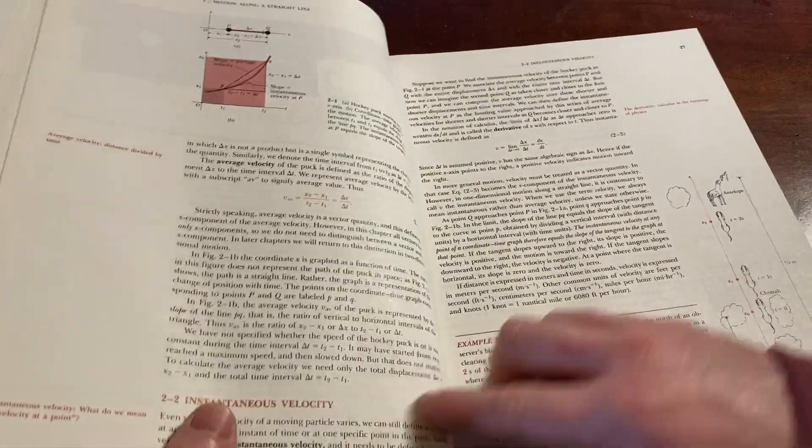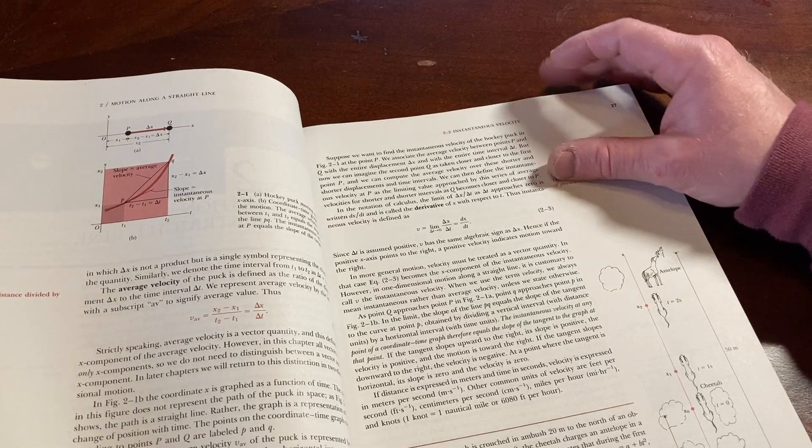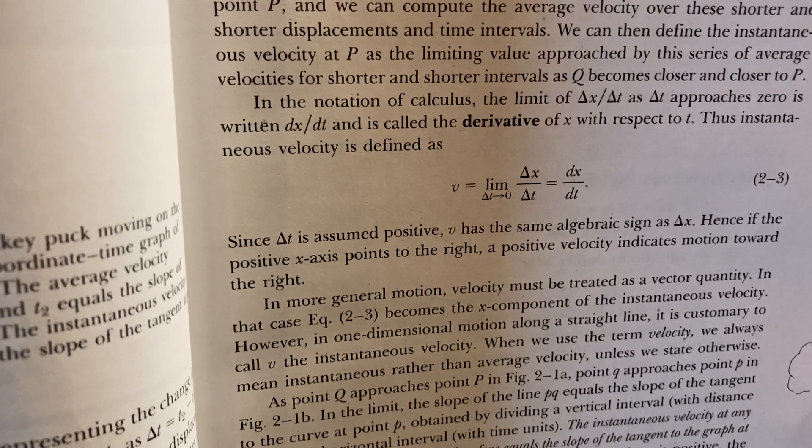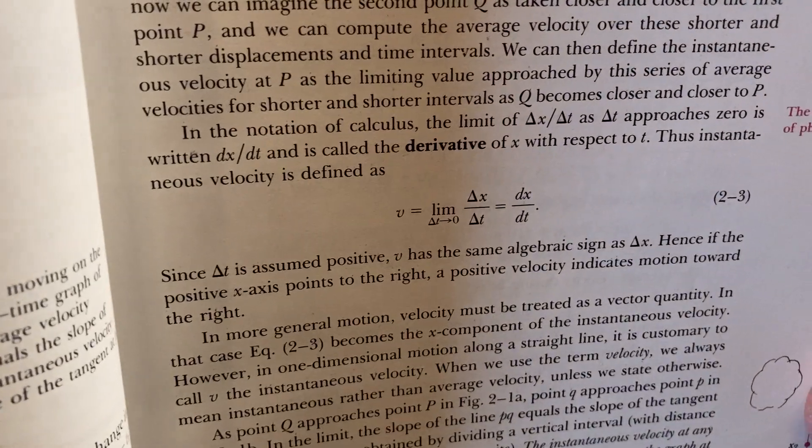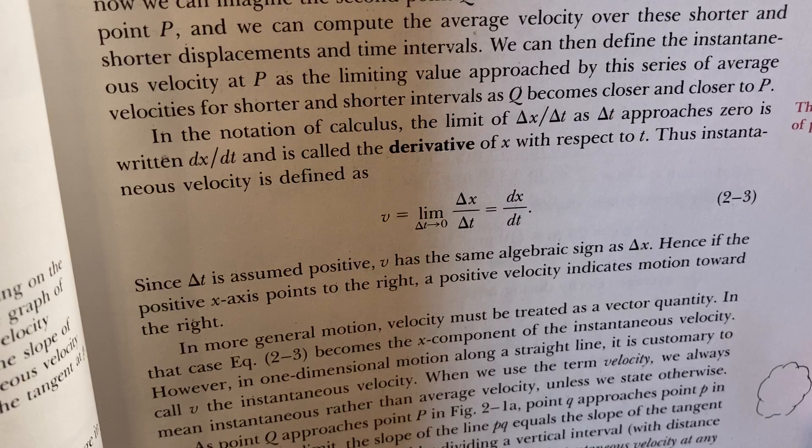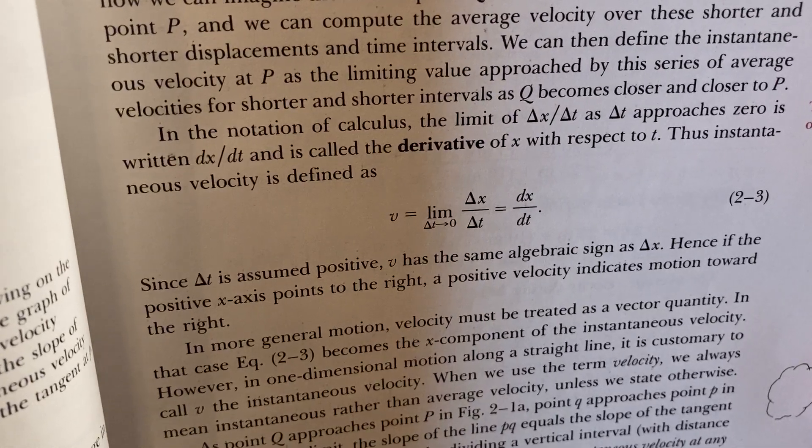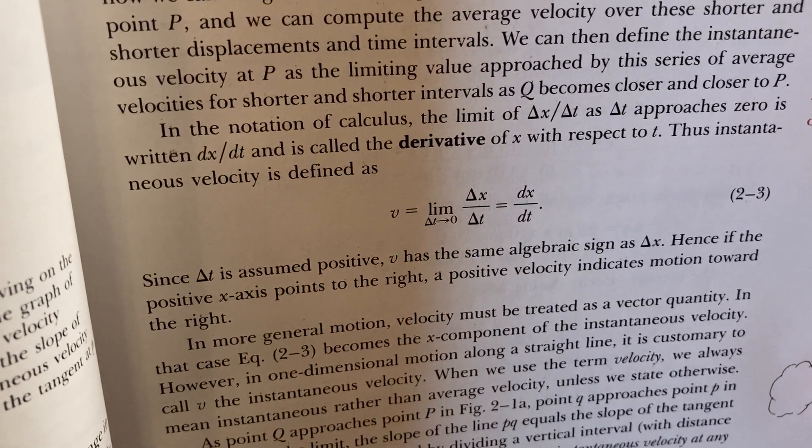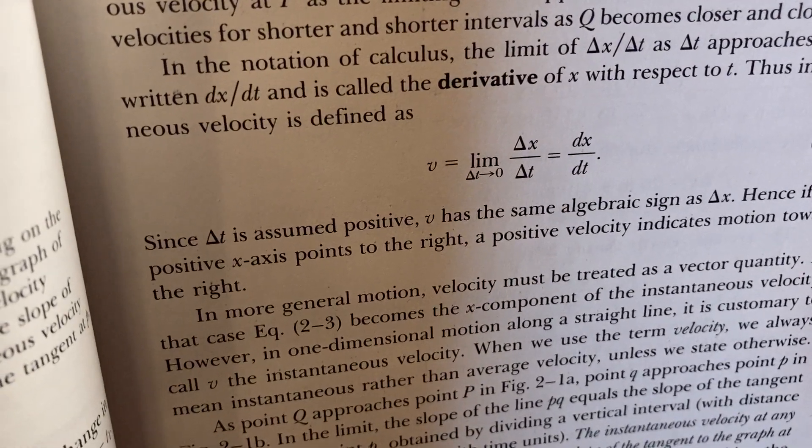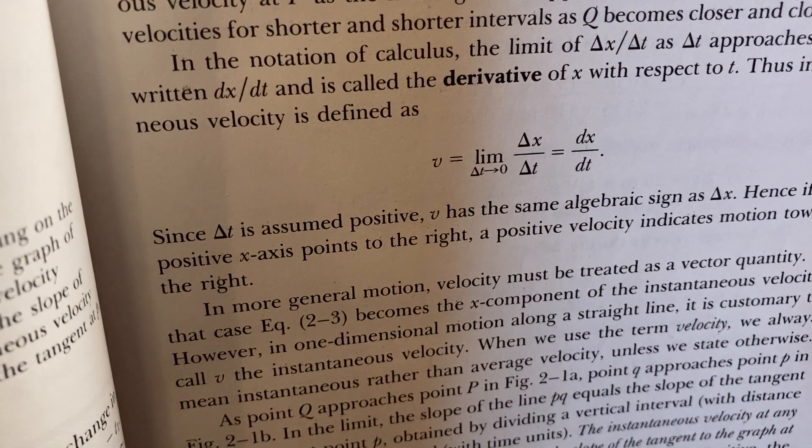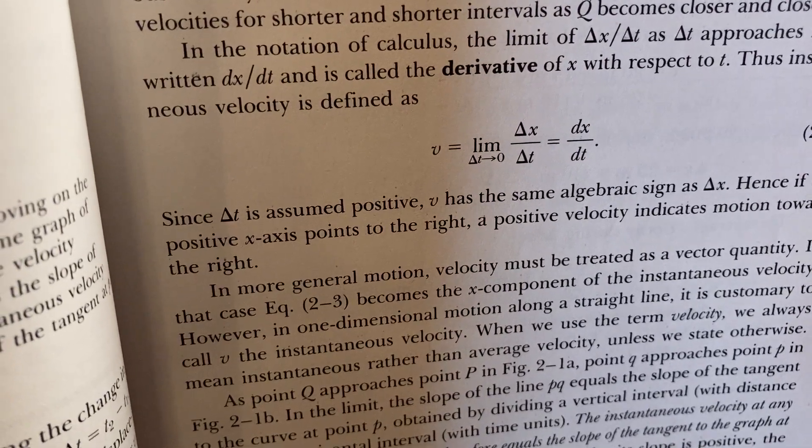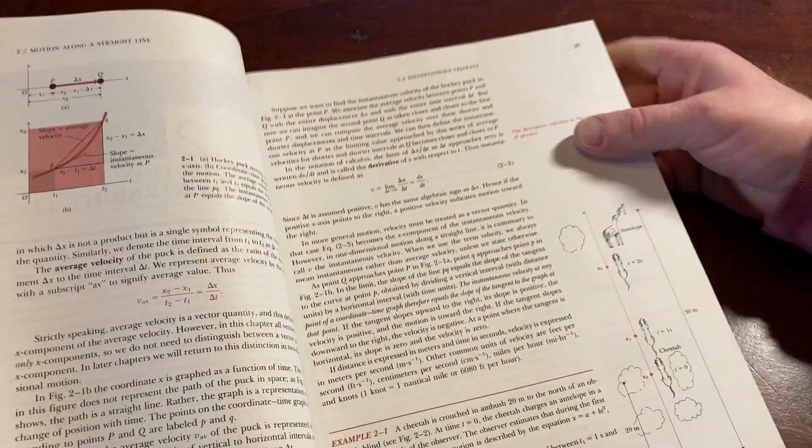Instantaneous velocity. That's a derivative, right? Instantaneous velocity is a derivative here. It's defining it. In the notation of calculus, the limit delta x, delta t, as delta t approaches zero, is written dx/dt and is called the derivative of x with respect to t. Thus, instantaneous velocity is defined as V is the limit as delta t approaches zero of delta x over delta t, and that's equal to dx/dt. Cool.